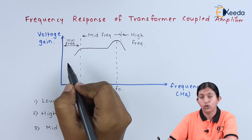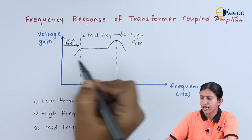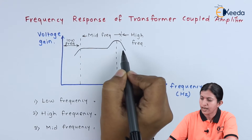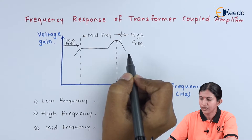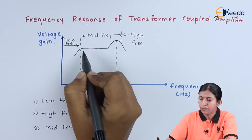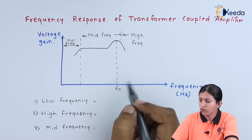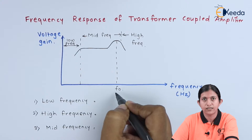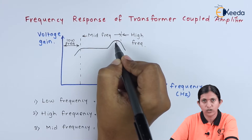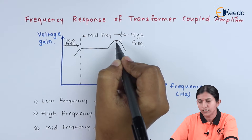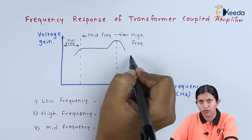At the low frequency region, the voltage gain reduces, and at the high frequency region, the voltage gain also reduces. In the mid frequency region, the voltage gain is constant, but at one particular frequency F0, we get the maximum voltage gain, after which the voltage gain rolls off.